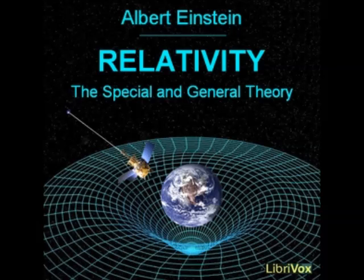But, since the observer believes in the general theory of relativity, this does not disturb him. He is quite in the right when he believes that a general law of gravitation can be formulated, a law which not only explains the motion of the stars correctly, but also the field of force experienced by himself. The observer performs experiments on his circular disk with clocks and measuring rods. It is his intention to arrive at exact definitions for the significance of time and space data with reference to the circular disk K'. He places one of two identically constructed clocks at the center of the circular disk and the other on the edge of the disk so that they are at rest relative to it.